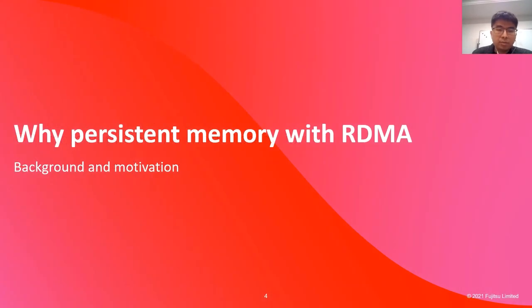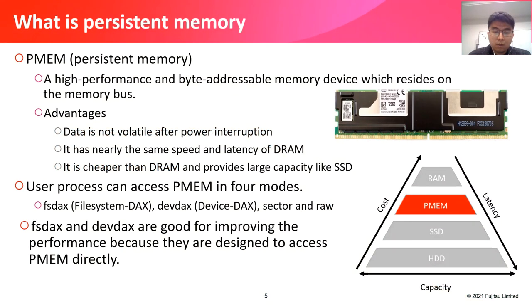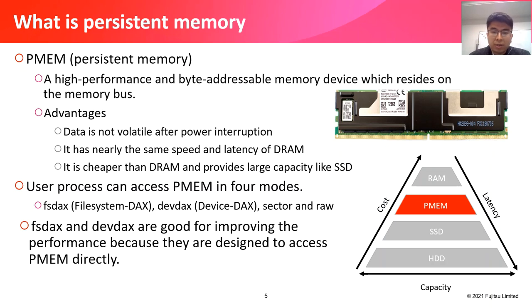Let me start from why persistent memory with RDMA. What is persistent memory? Persistent memory is a high-performance, byte-addressable memory device. It resides on the memory bus. P-memory is the short form of persistent memory. It has many advantages: data is not volatile after power interruption, it has nearly the same speed and latency as DRAM, and it is cheaper than DRAM while providing large capacity like SSD.